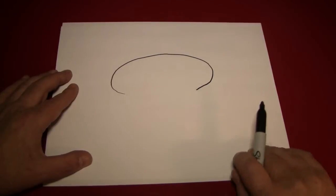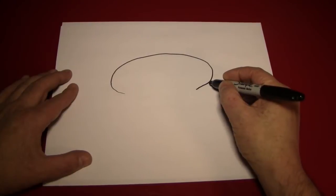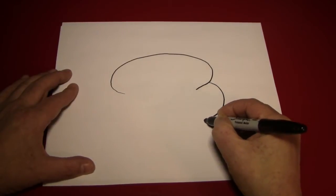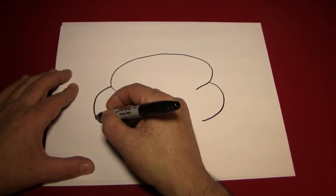Now we're going to put big curves on the sides like this coming from our egg shape. Put one on the left and one on the right.